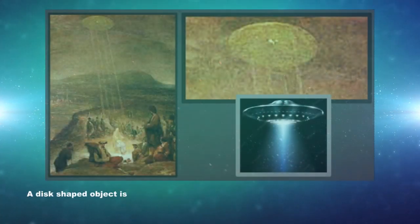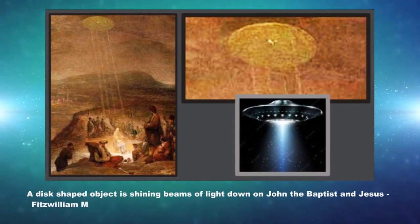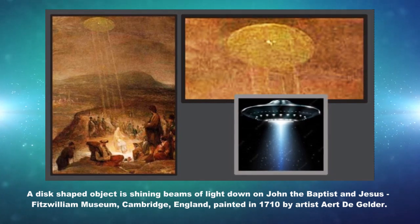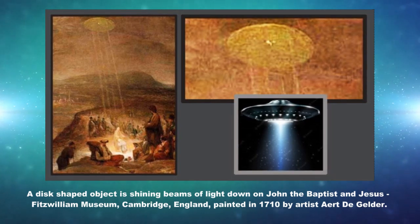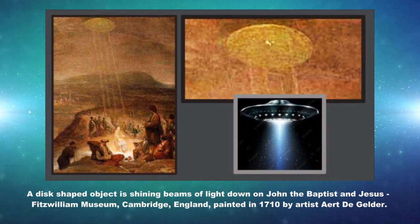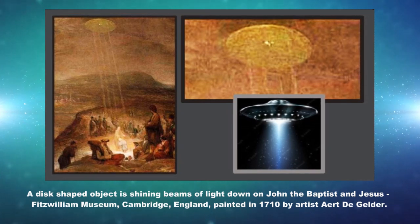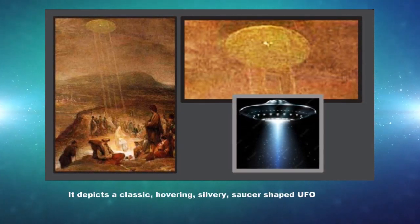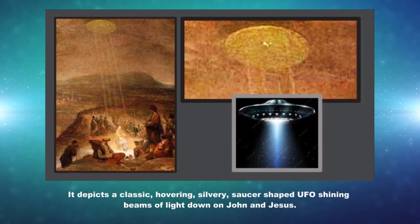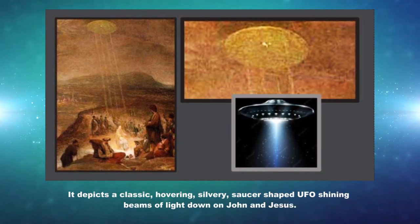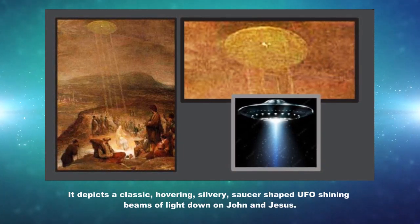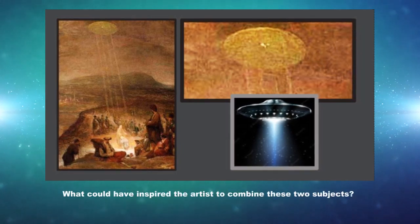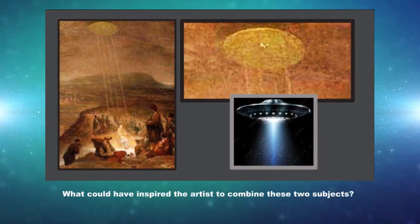A disc-shaped object is shining beams of light down on John the Baptist and Jesus. This is from the Fitzwilliam Museum in Cambridge, England, painted in 1710 by artist Aert de Gelder. It depicts a classic hovering silvery saucer-shaped UFO shining beams of light down on John and Jesus. What could have inspired the artist to combine these two subjects?